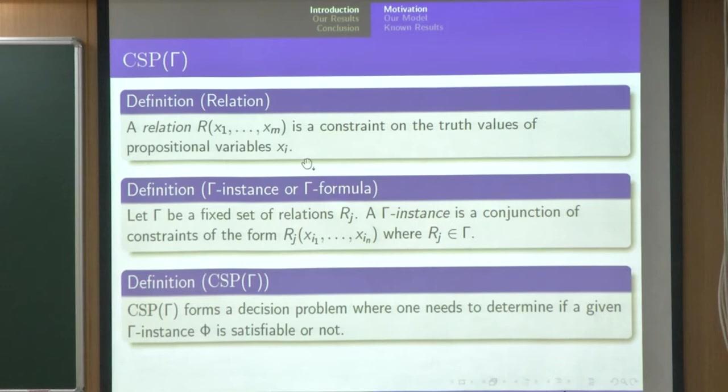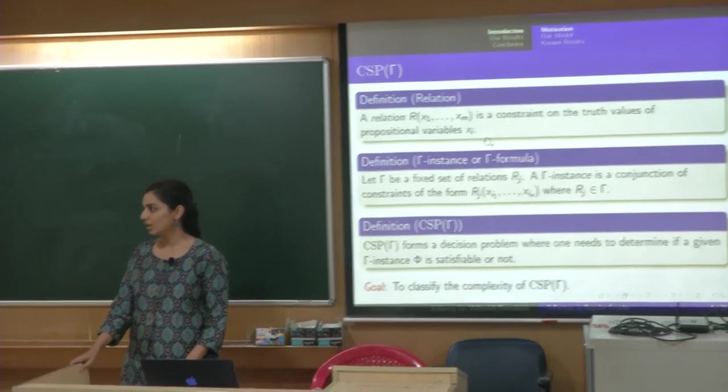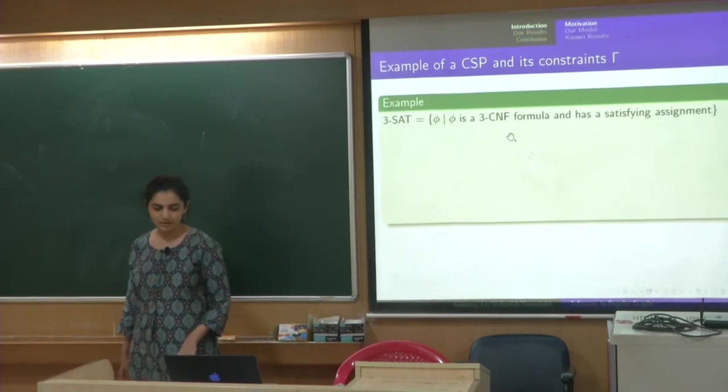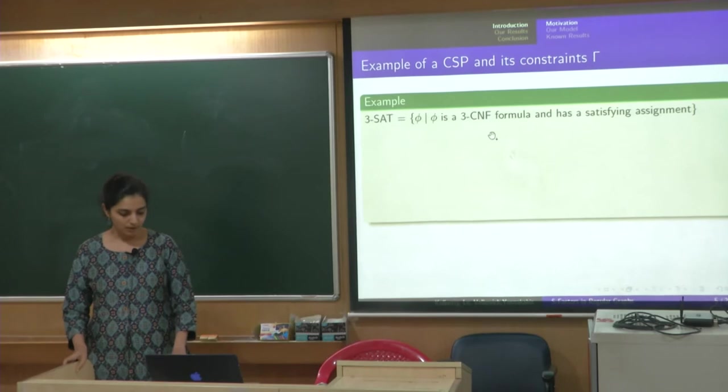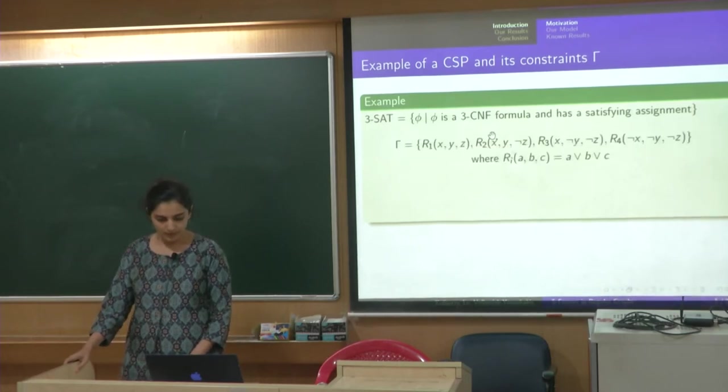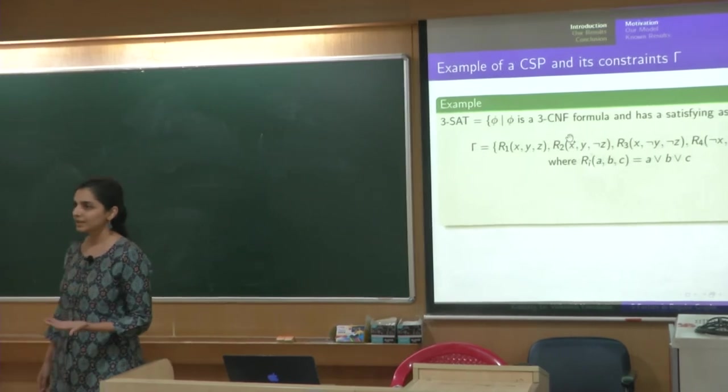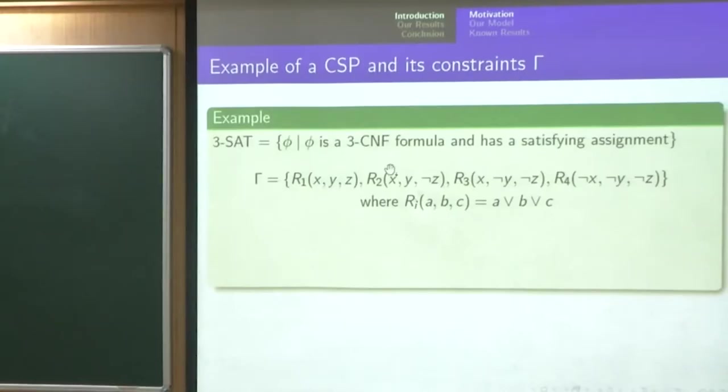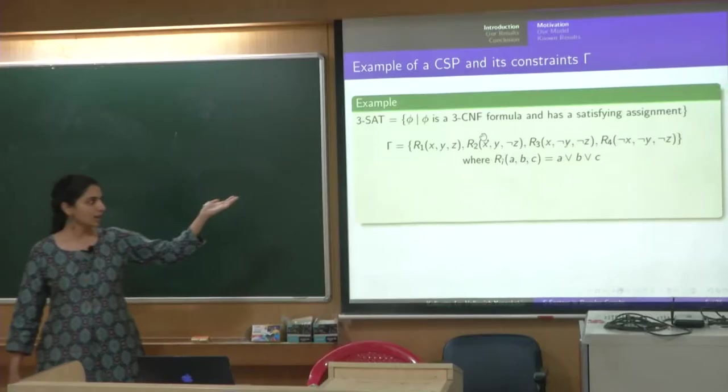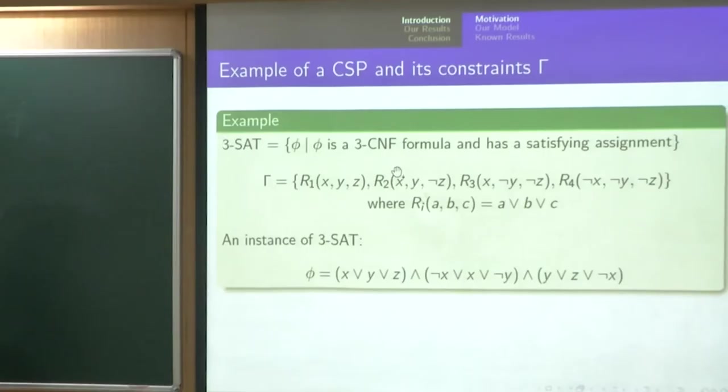So, a constraint satisfaction problem over the alphabet gamma or over the set of relations gamma is a form of a decision problem where one needs to determine if a given gamma instance phi is satisfiable or not. So, it is exactly what we understand just spoken in a slightly different language and now the name of the game is to classify the complexity of CSP of gamma. So, let us go through some quick examples, 3SAT is just a formula over 3CNF formula and those which are satisfiable form this set.